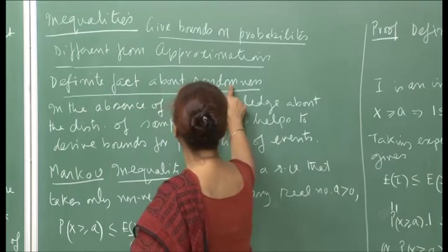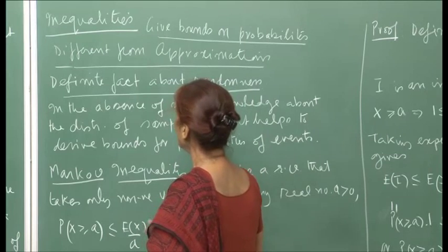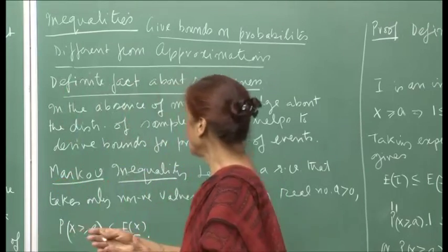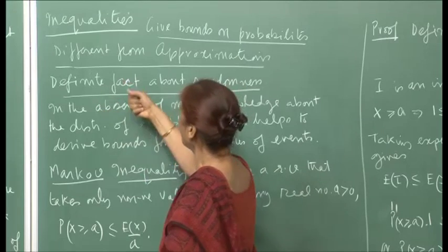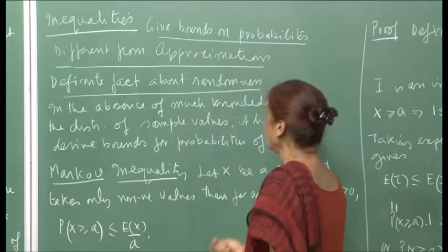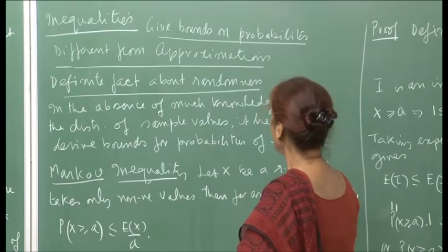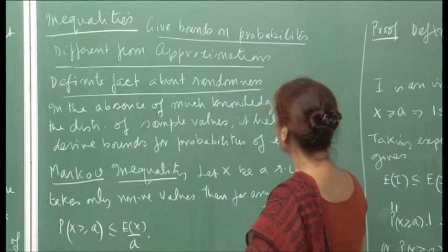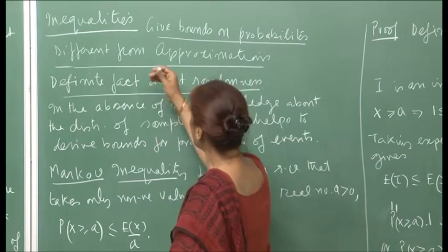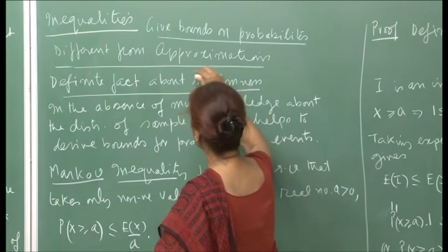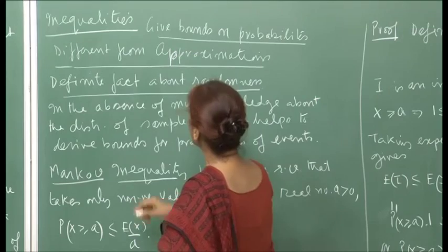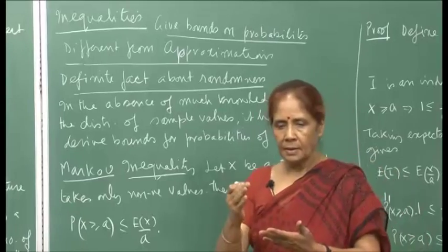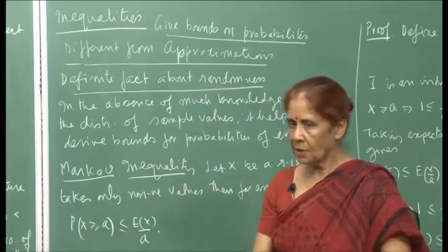It is a definite fact about randomness. You have some event and you are able to say that the probability of this event will be less than or equal to a definite number. So you give a bound — lower bound, upper bound, whatever is possible. Mostly we will see that we talk about upper bounds.